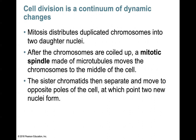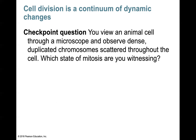Cell division is a continuum of dynamic changes. Mitosis functions to distribute duplicated chromosomes into two daughter nuclei. The cells created during mitosis are exact copies of the parent cell. After chromosomes are coiled up, a mitotic spindle made of microtubules moves chromosomes to the middle of the cell. Sister chromatids then separate and move towards opposite poles where two new nuclei form. These dynamic changes are characterized by the phases of mitosis: prophase, metaphase, anaphase, and telophase.